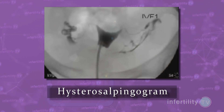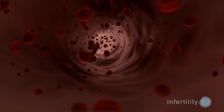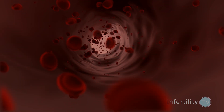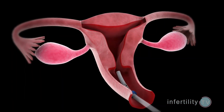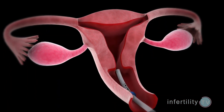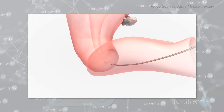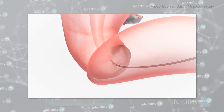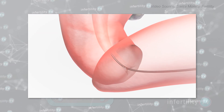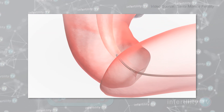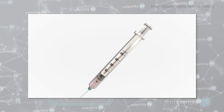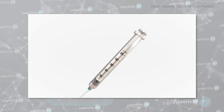Here's how it works. After the bleeding from your period has ended, a doctor places a catheter into the uterus. Contrast, which is a liquid that shows up on x-ray, is squirted into the uterine cavity. The liquid fills the uterine cavity.